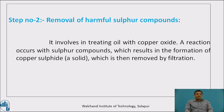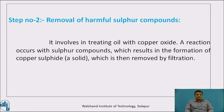Step 2 is the removal of sulphur and sulphur compounds. In some geological conditions, the earth is rich in sulphur salts, and therefore a considerable amount of sulphur compounds may be present in crude oil. If used without removing sulphur, it may cause several environmental issues, because when such fuel is burned, the sulphur present converts into sulphur dioxide in the atmosphere. Therefore, it is essential to remove sulphur before the use of petroleum products. It is removed by treating the crude oil with copper oxide. A reaction occurs with sulphur compounds, resulting in the formation of copper sulphide, which is then removed by filtration.